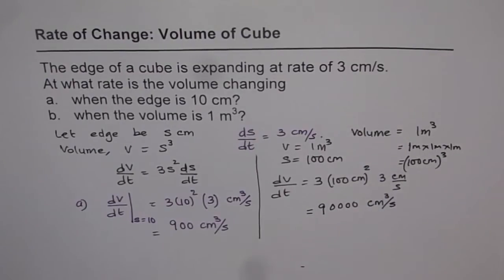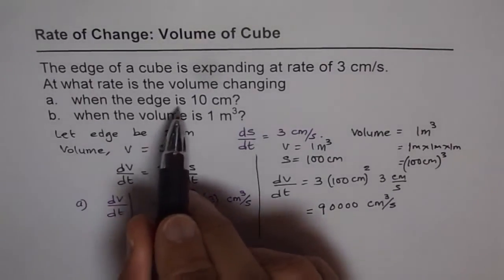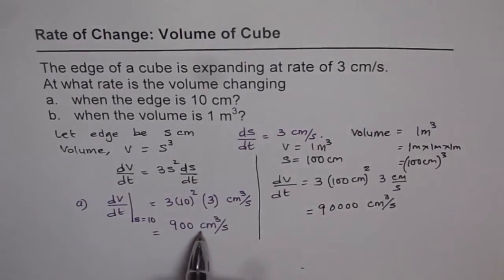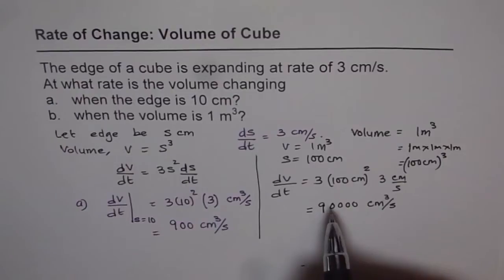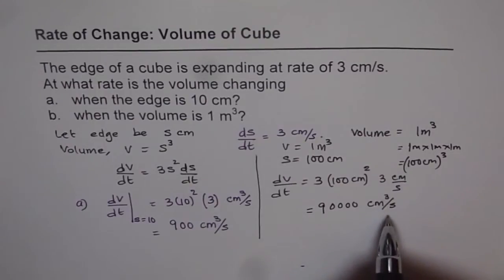So our answer for part a is when the edge is 10 centimeters, then it is 900 centimeter cube per second. And when the volume is 1 meter cube, at that time the rate at which volume is changing is 90,000 centimeter cube per second. So that's how you need to do this question. Thank you and all the best.